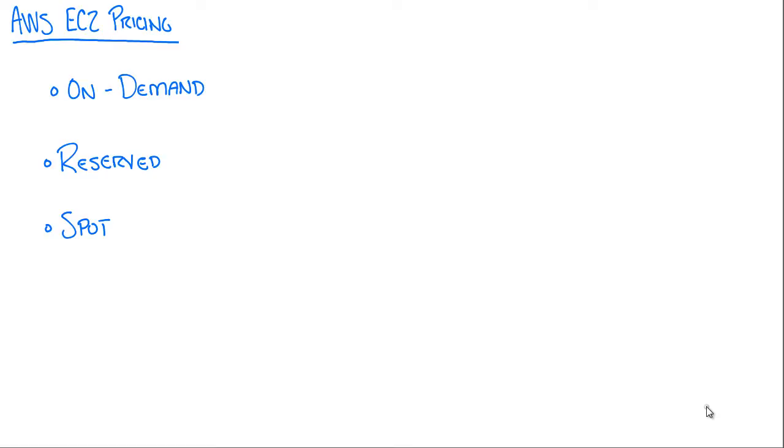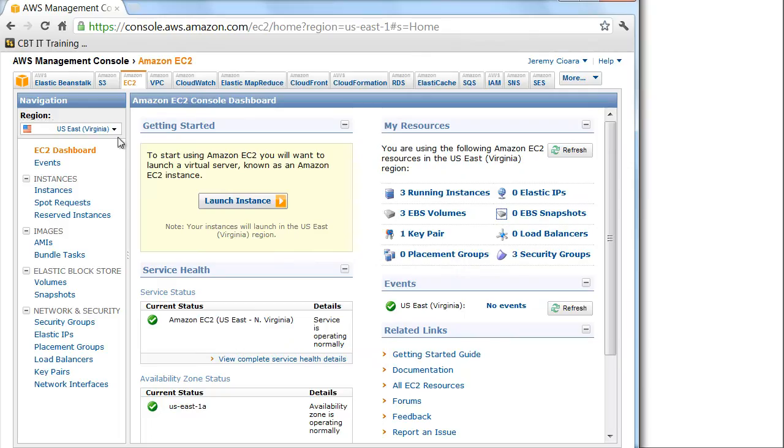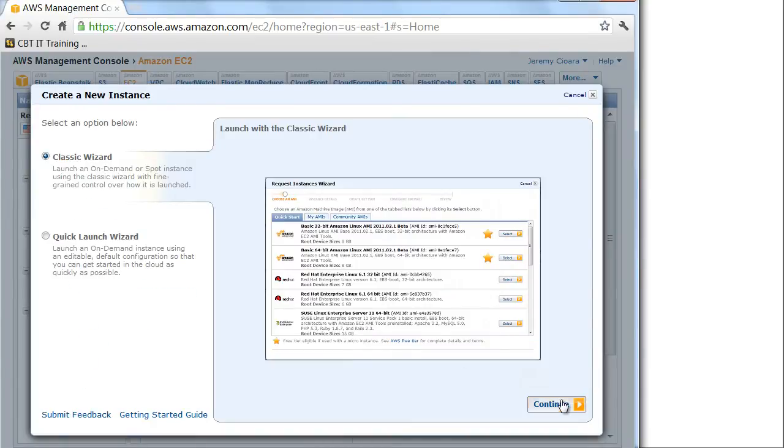Now most people start with on-demand simply because it's so simple. You come to the AWS Management Console, EC2, you launch an instance, choose what you want.